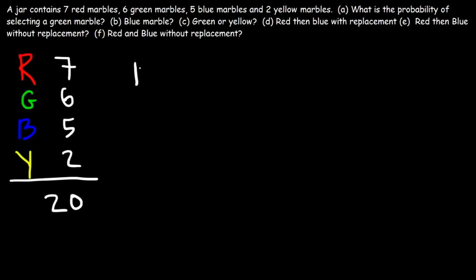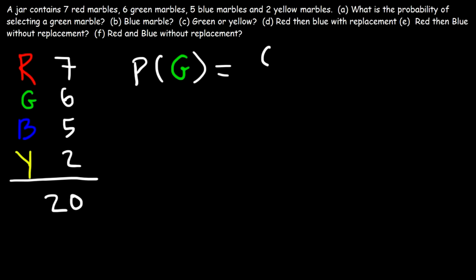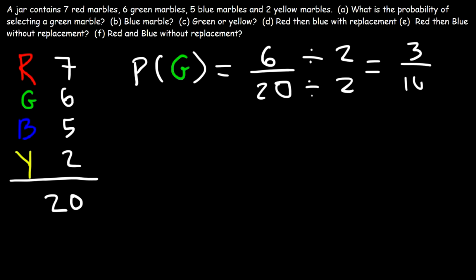Now if you want to calculate the probability of getting a green marble, what you need to do is find the number of green marbles in the jar. There are six green marbles divided by the total number of marbles, which is 20. So the probability is 6 out of 20. Since both numbers are even, we can divide them by 2. Half of 6 is 3, half of 20 is 10. 3 over 10 is basically 0.3 as a decimal, which is equal to 30%. So there's a 30% chance of selecting a green marble from this jar.